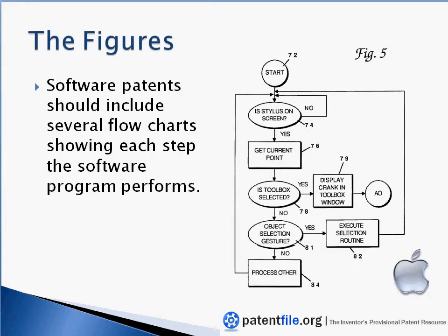Figures for a software patent application look a little bit different than, say, a traditional patent on a widget or a new device, because for a software patent we're trying to patent the unique method or the unique steps that your software program goes through. You can see here this is a very old patent from Apple back when they had styluses before they had touch screens, and this talks about some software steps that this Apple device went through using the stylus. It goes through this process, and when it gets to a decision point — is toolbox selected? If yes, then the software program does this step; if no, then it does this step. It's a very simple flow chart that you can make using Microsoft Word or any other software program, and this will show you exactly what the unique features and unique steps of your software patent application are.